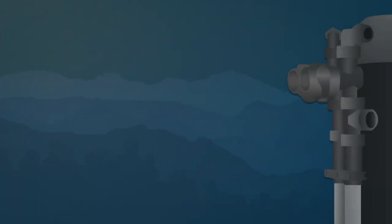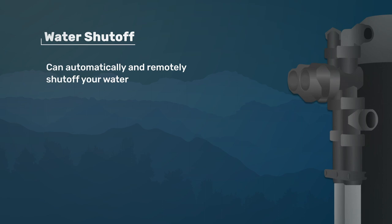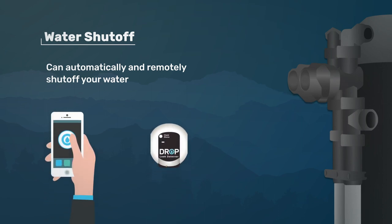Drop cartridge filters have the ability to shut off water flow to the home remotely through the drop connect app. This puts the ability to turn your water off or back on in the palm of your hand.